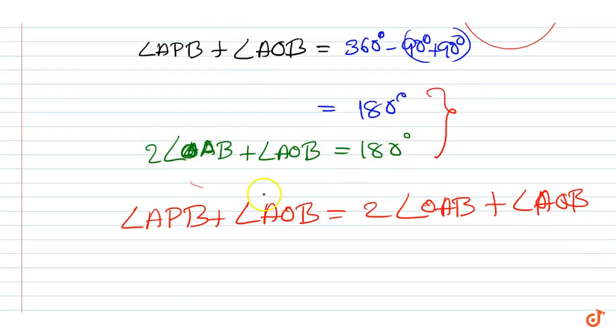Now, if we cancel these two angles we get, angle APB equal to twice angle OAB. That is our proof.